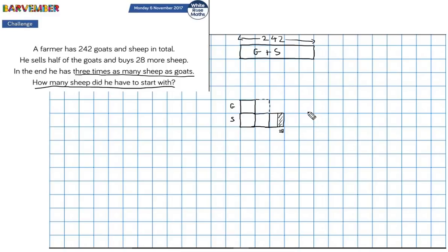Okay. So this is looking a little bit more promising now. I've got some more information in it. What else do I need? How do I figure out what each of these blocks is worth? How can I do this? Well, I've got some information up here. He had 242 goats and sheep in total.